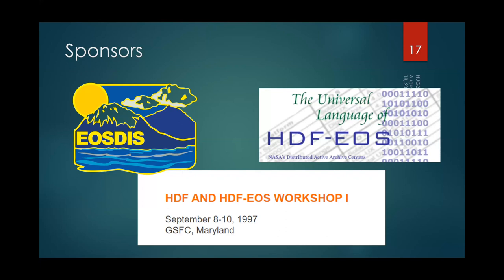As soon as HDF5 came out, NASA started working on HDF-EOS 5 — the same API but with HDF5 under the hood. They decided that future satellites would use HDF5 rather than HDF. The first satellite flew in 1999 and definitely used HDF still, but all future ones used HDF5.